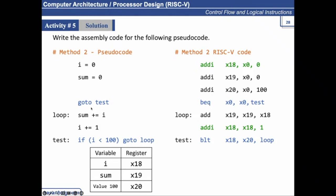Then this is the unconditional branch 'go to test', which means no matter what, we have to jump to test. So we can use the BEQ x0, x0 and test, so it will directly jump to test.